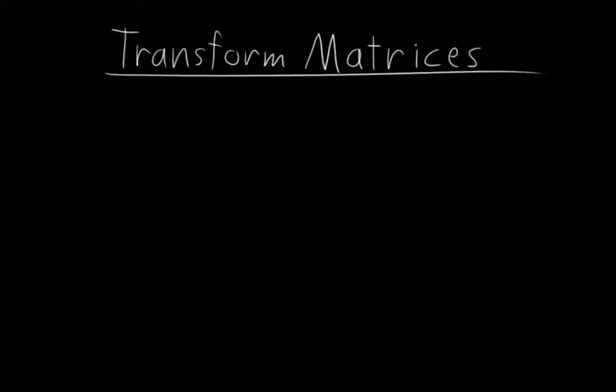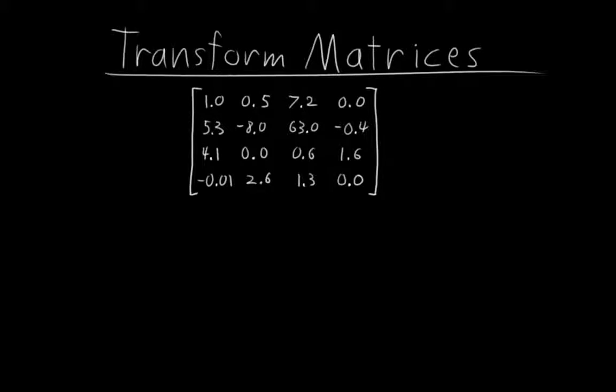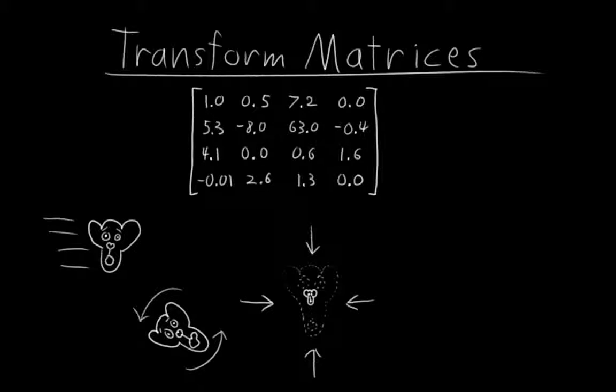So the last thing I want to touch on before we get back to actual rigging is something called transform matrices. A transform matrix is a 4x4 grid of numbers that represents everything about the location, rotation, and scale of an object.